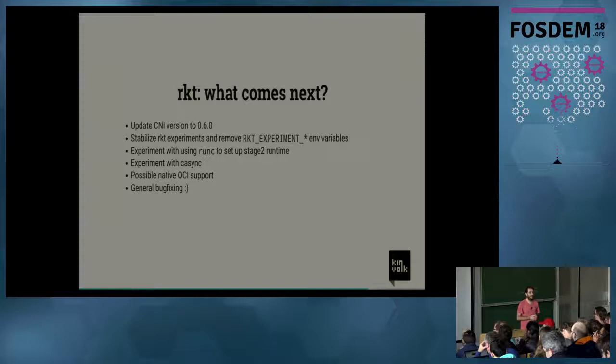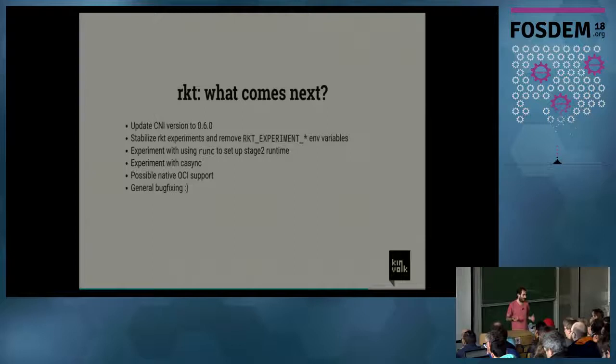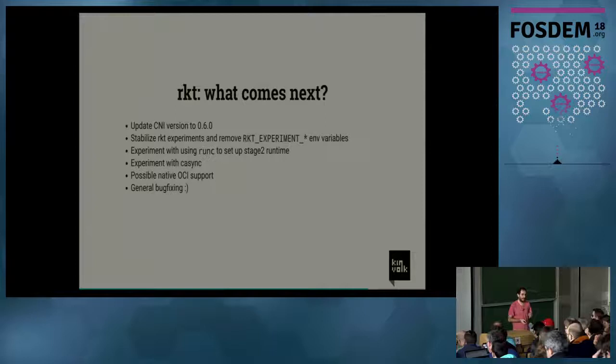What comes next for Rocket? We need to update the CNI version, because Rocket is using version 0.3 and some features added later are of interest. But it's kind of hard because there are a lot of assumptions in Rocket that depend on the previous CNI behavior. We should also stabilize the Rocket experiments, since it's not ideal to require an environment variable to do sandbox operations — we should remove that and make sure things work properly.